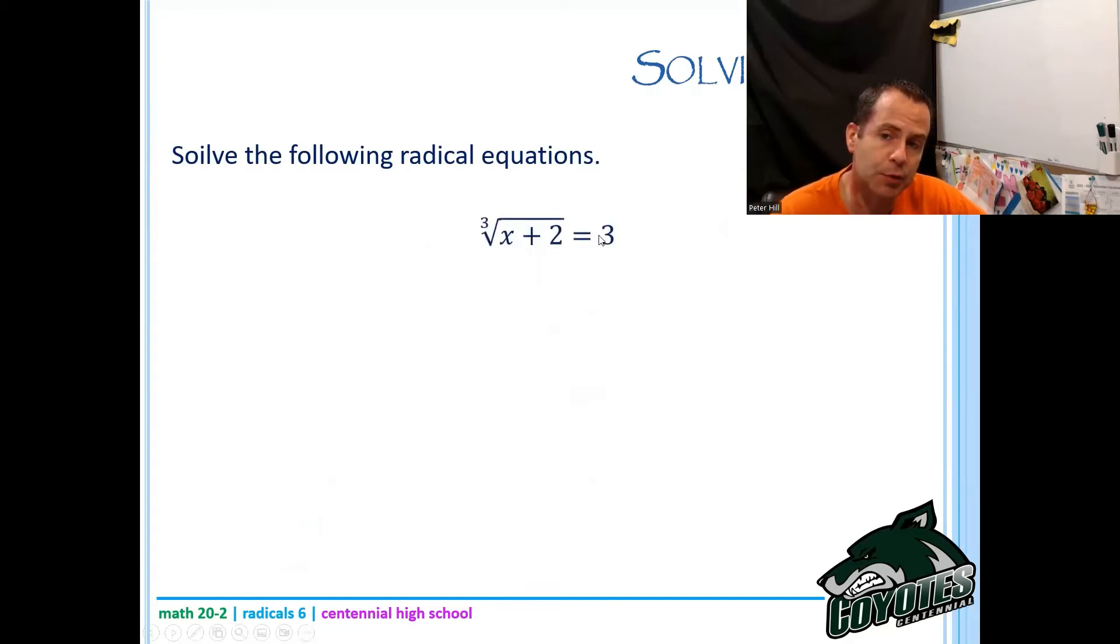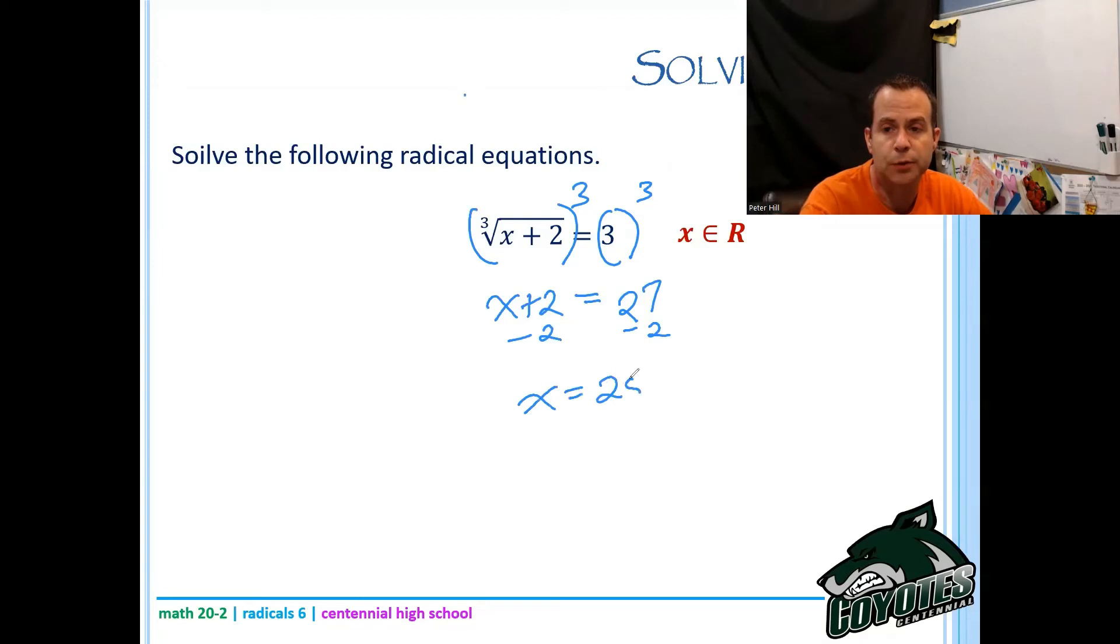The cubed root of x plus two equals three. Now here, because it's a cube root, there's actually no restrictions. I can take the cube root of a negative, no problem. So I say x is a member of the reals. Now, in order to get rid of that cube root, I don't want to square it this time. This time, I want to take both to the three. I'm taking both sides to the exponent of three. That's going to leave me with x plus two on this side, and then 27 on the other side. And then I just subtract two, and I'm left with x equals 25.